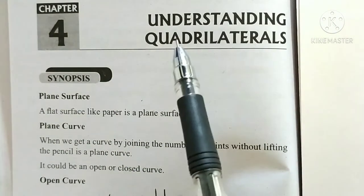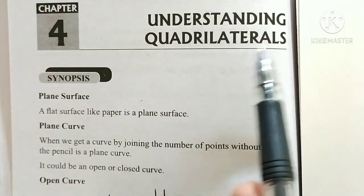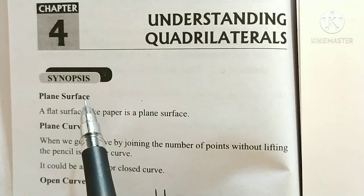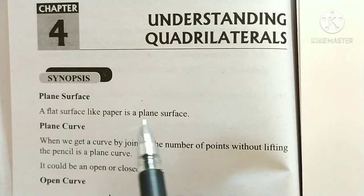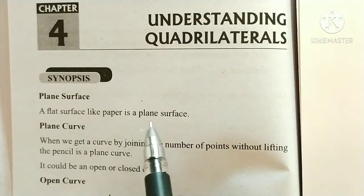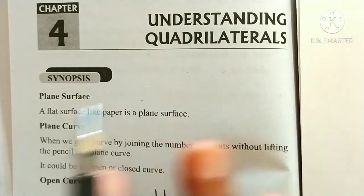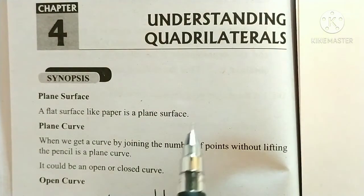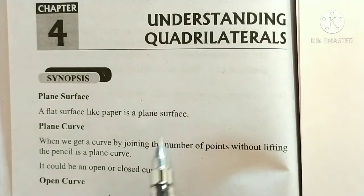Chapter 4: Understanding Quadrilaterals. The main important points in this chapter begin with plane surface. A flat surface like paper is a plane surface. You know that a paper is flat, so a flat surface is a plane surface. A table top is also an example of a plane surface.